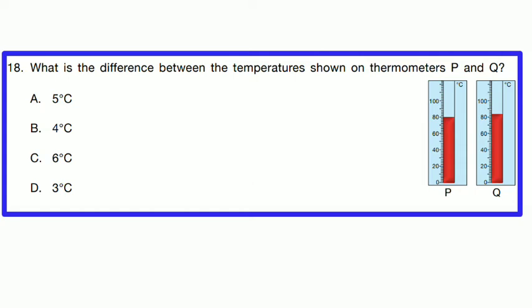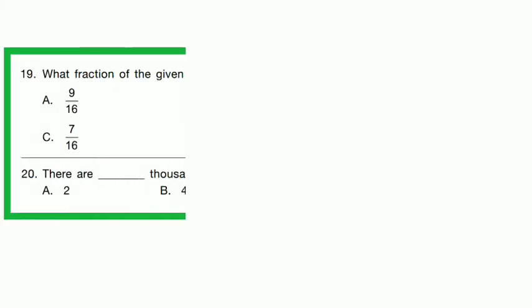Question No. 18: What is the difference between the temperatures shown on thermometers P and Q? Temperature on thermometer P is 80°C and on thermometer Q is 84°C. Difference = 84 − 80 = 4°C. Option B is correct.